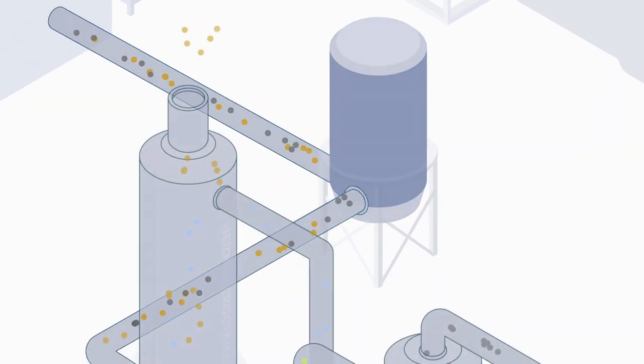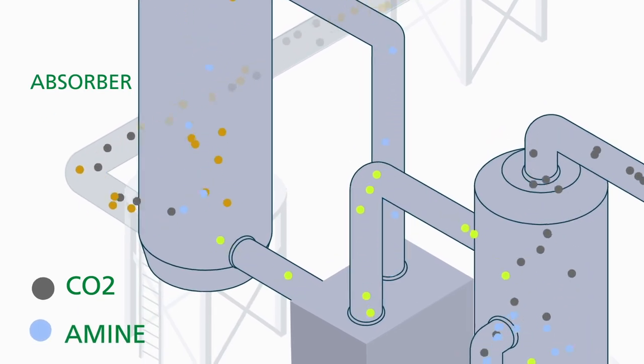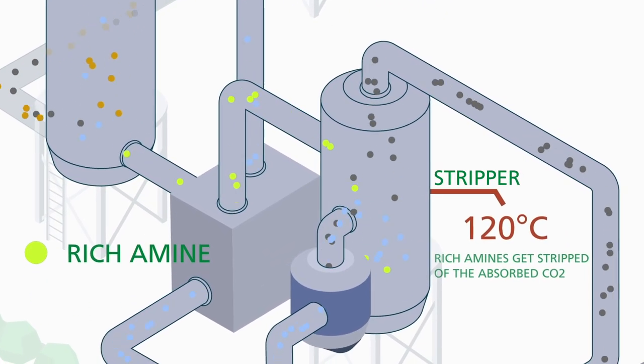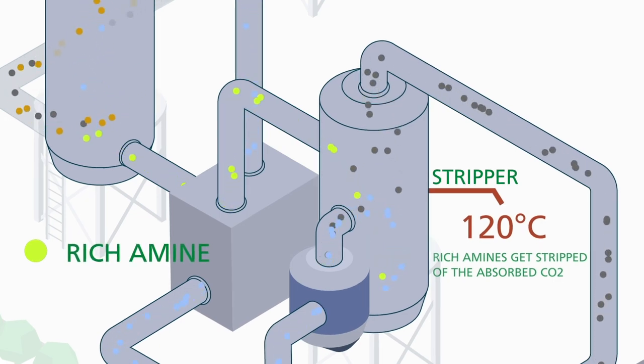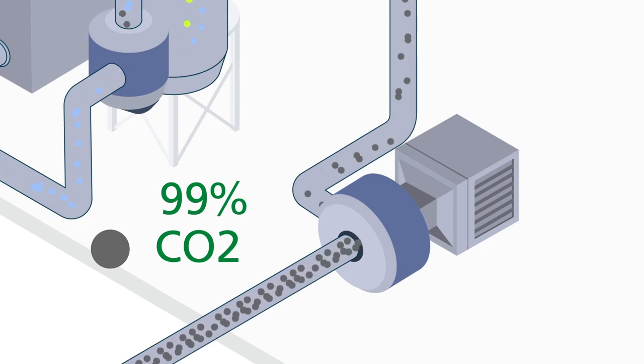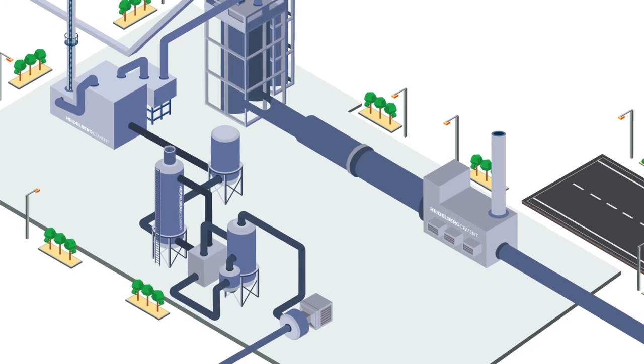While the nitrogen is released, the CO2 reacts and binds with an amine liquid in the absorber. The resulting rich amine is heated up so that the solution splits up again into CO2 and amine liquid. The CO2 obtained is about 99% pure. It's directed into a compressor to be transported away.